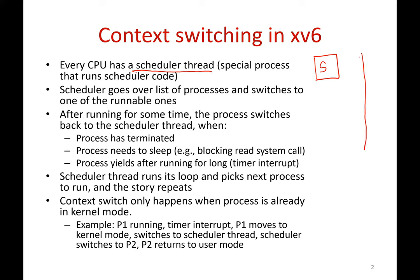The scheduler goes over the P table. Xv6 maintains an array of all processes in the system called the P table, with an entry for every process. The scheduler goes over this list of processes, finds a runnable process, and switches to it. If the P table entry is not valid, not used, or the process is sleeping, you won't switch to it — you find a runnable entry and switch to it.